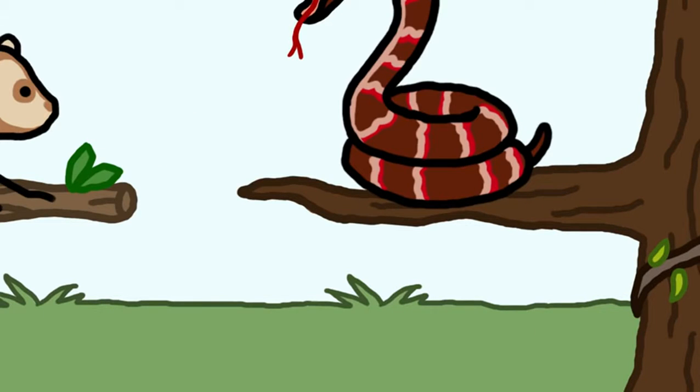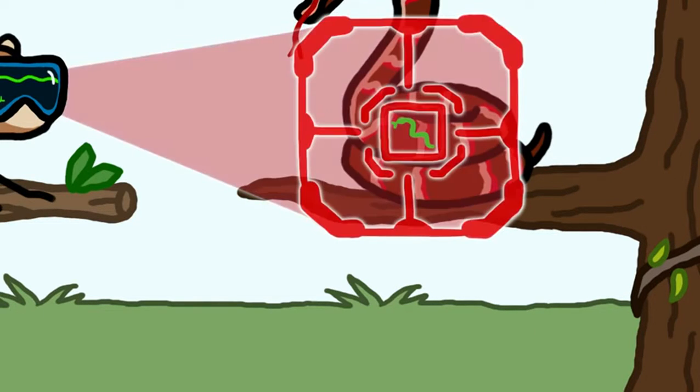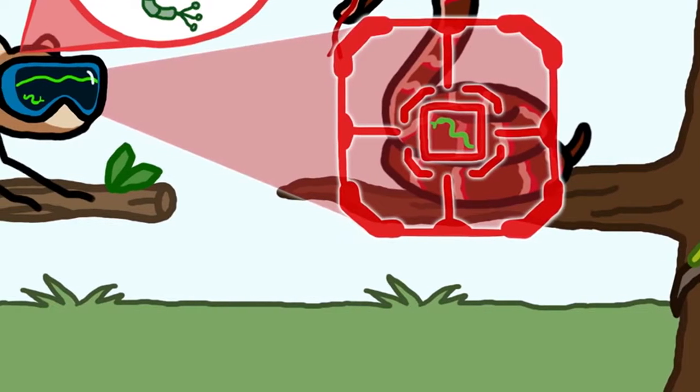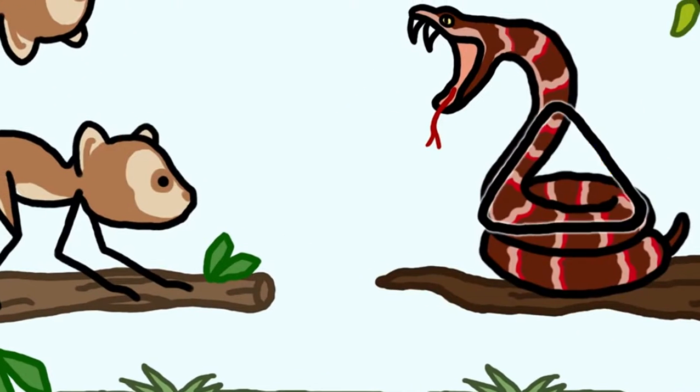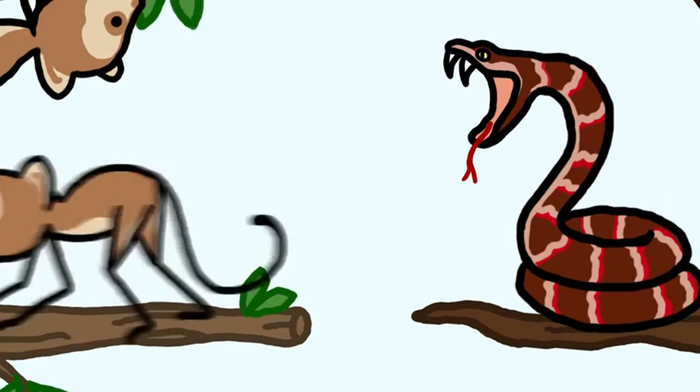But eventually, some of these primates evolved what amounted to snake detectors, adaptations like neurons devoted specifically to snake-spotting that helped the proto-monkeys quickly recognize a wriggling stick as dangerous and get out of dodge.